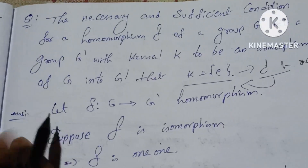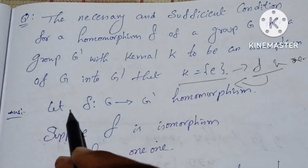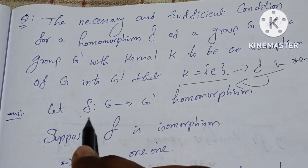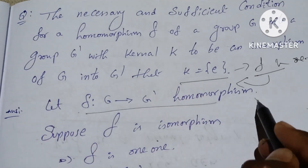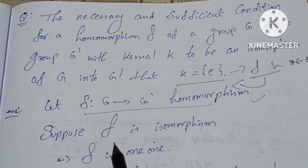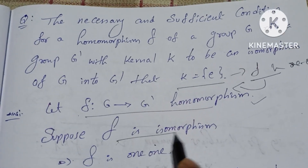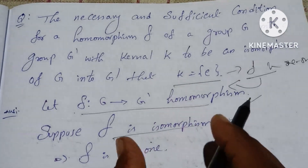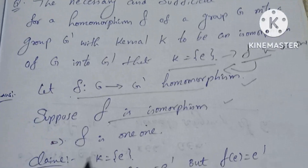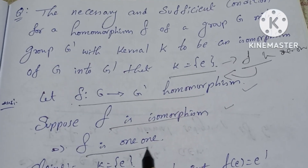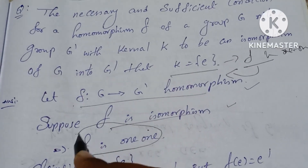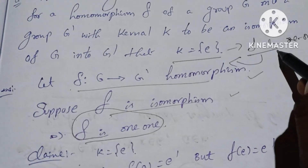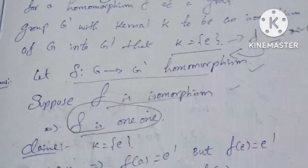Let's go. The solution: F from G to G' is an isomorphism. Suppose F is an isomorphism. Then F is one-to-one — this is the first condition. If we want to prove it, F is one-to-one implies K equals E.